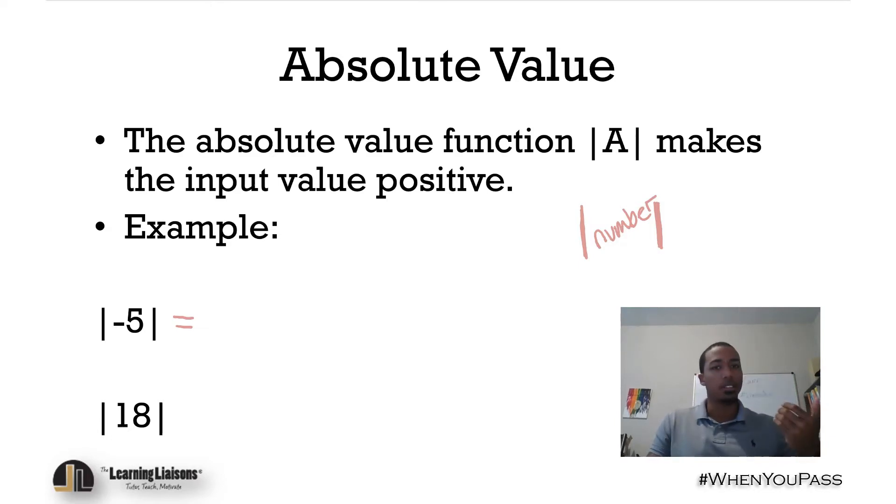The absolute value of 18 - well, 18 is 18 numbers from 0, and so the distance is just 18. Again, the absolute value function makes anything within it positive.